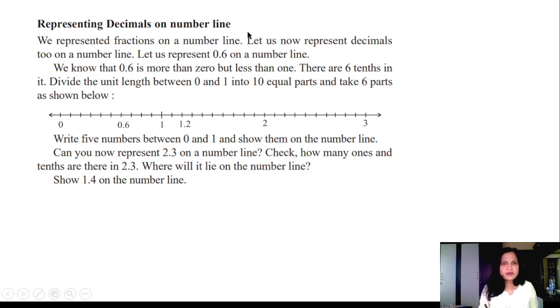Representing decimals on the number line. You use the number line to represent the numbers and perform addition and subtraction. Here you will come to know how to represent the decimals on the number line. We have a scale now. On the scale you have these small marks. 0.6 is more than 0 but less than 1. In between 0 and 1 in your scale you have 10 divisions, so this is 0.6 means 1, 2, 3, 4, 5, 6, this is 0.6. Like this you'll mark 1.2, 1.4, 2.3.